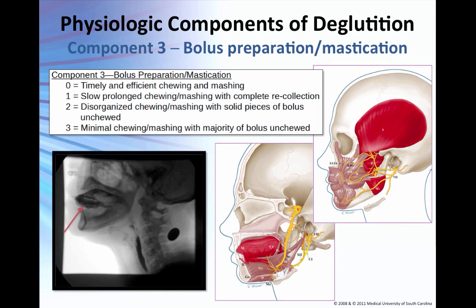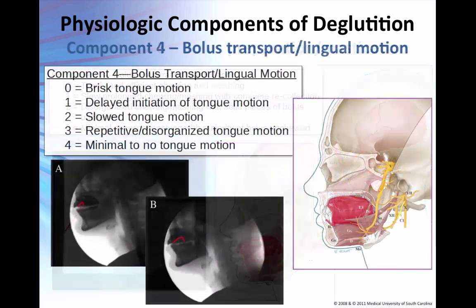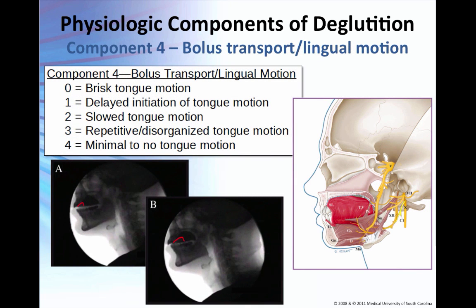Bolus preparation and mastication is the ability to efficiently chew the bolus and prepare it safely for swallowing. Bolus transport lingual motion is an assessment of the speed and efficiency of lingual movement to propel a bolus through the oral cavity. You begin your assessment after there's initiation of oral tongue movement — once they start to move their tongue, that's when you assess the integrity of its movement.